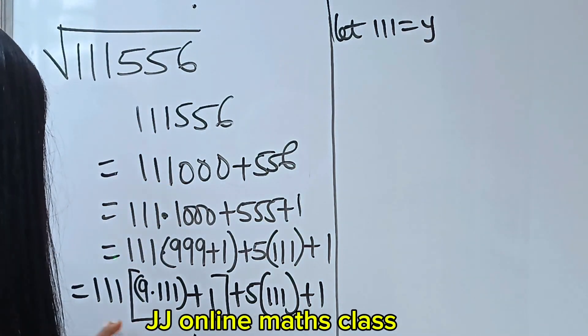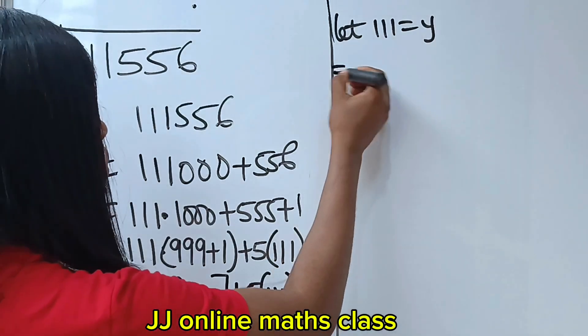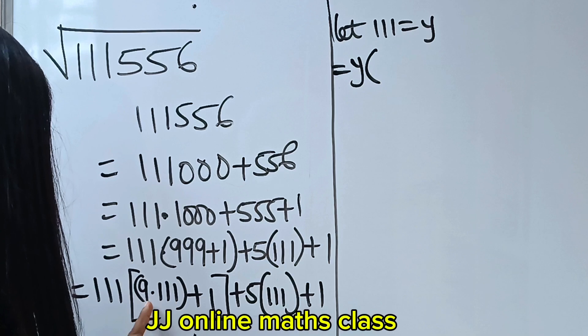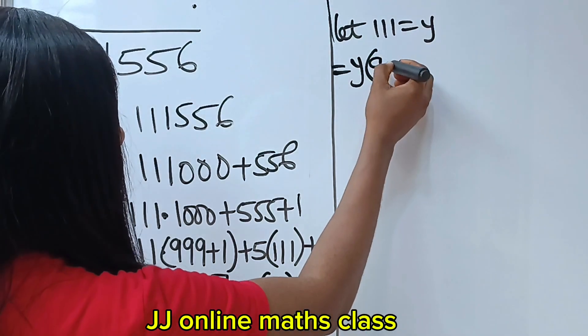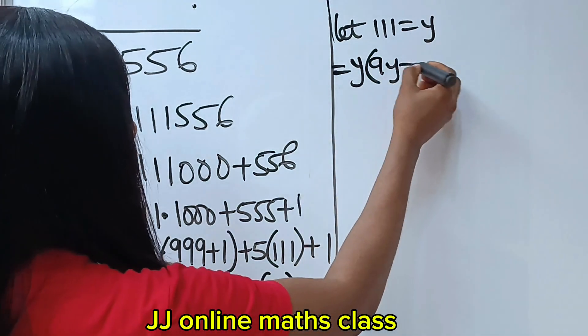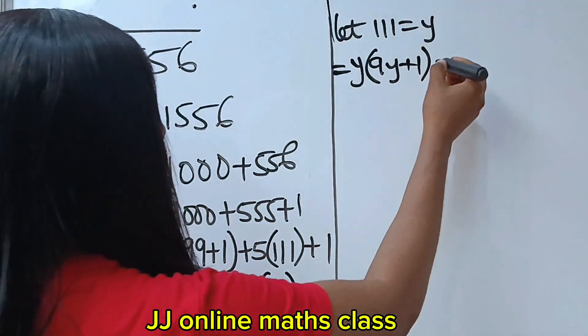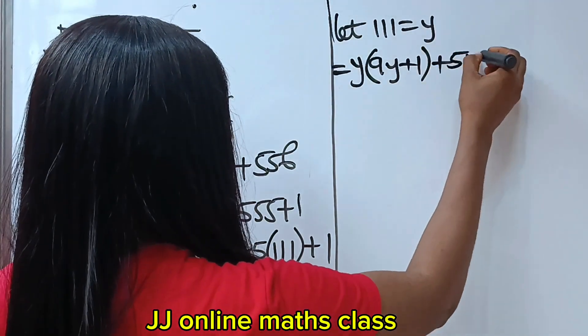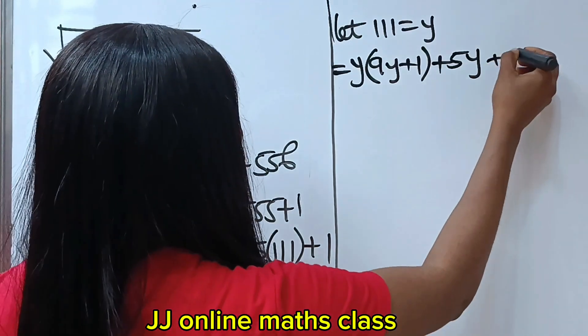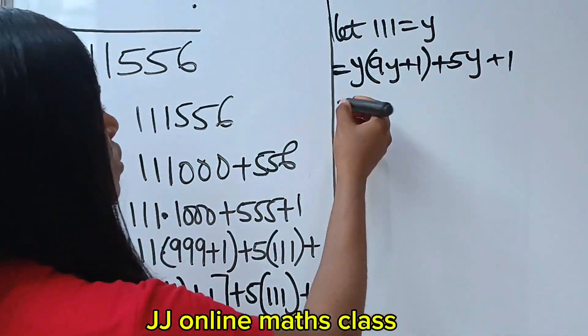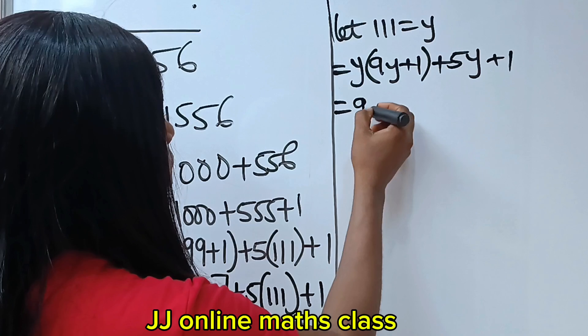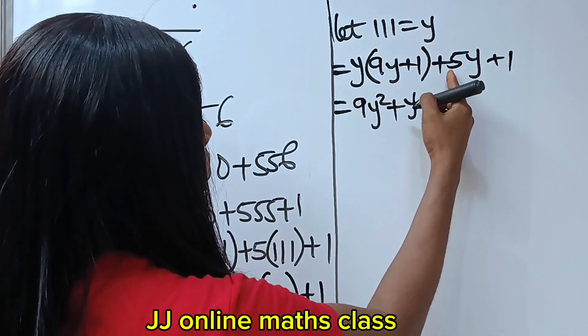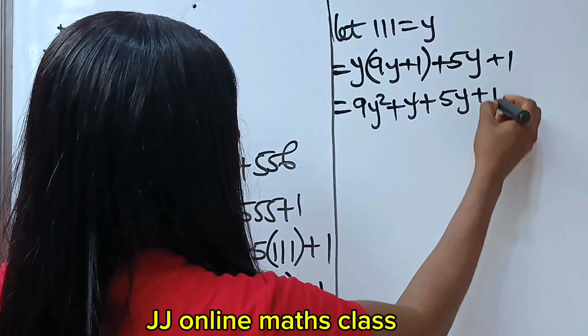So, we are going to write this as what? That means we have 111 is y. Y brackets 9 times y, that is 9y plus 1, then plus we have 5y, 5y plus 1 plus 1. So we multiply 9y times y is 9y squared plus y times 1 is y plus 5y plus 1.